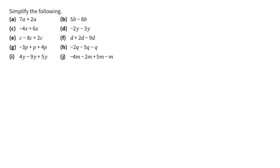Hello everyone, welcome to this video where we will explore simplifying algebraic expressions. For this particular question, we are supposed to simplify the following. We look at the like terms: 7a plus 2a — how many a in total? This will equal 9a.